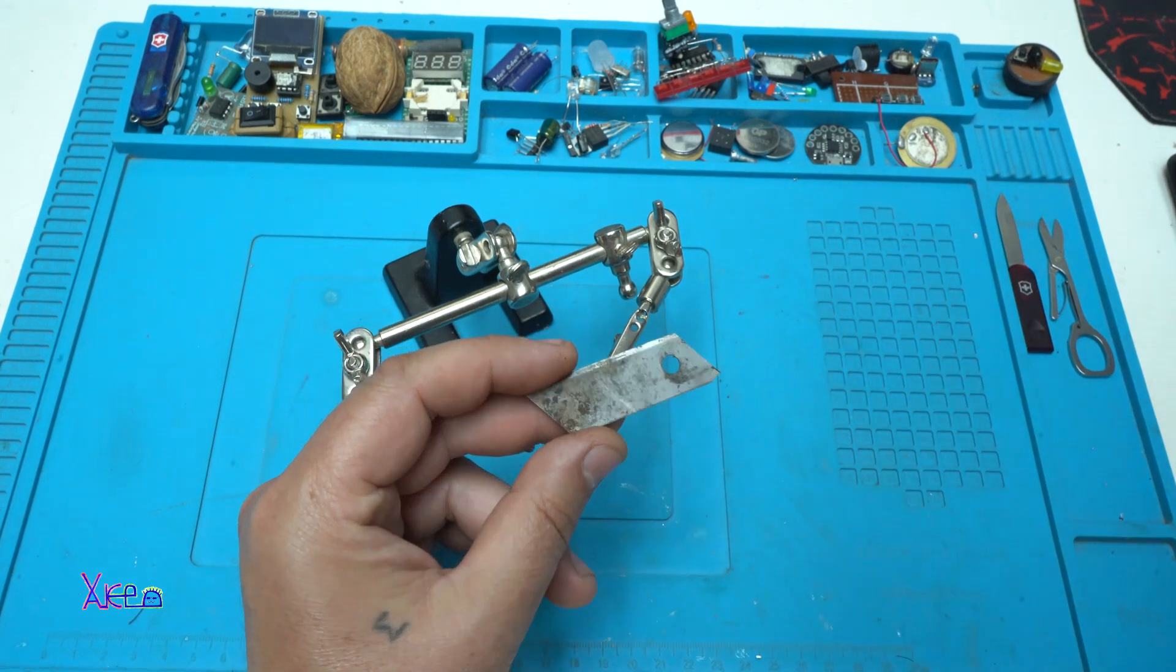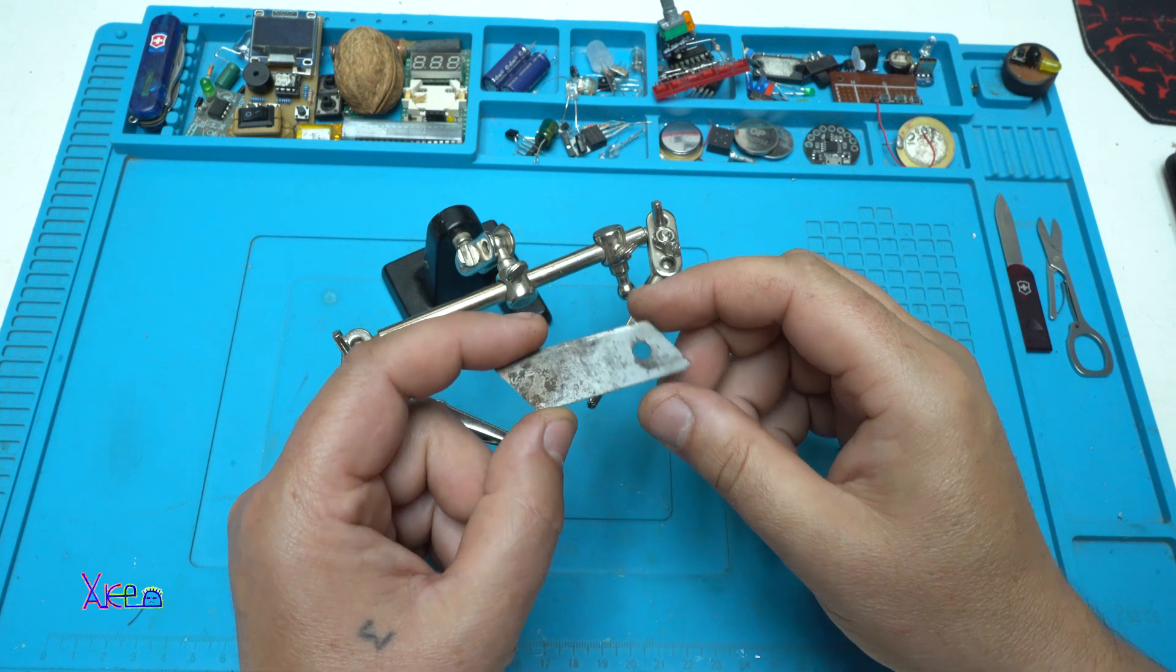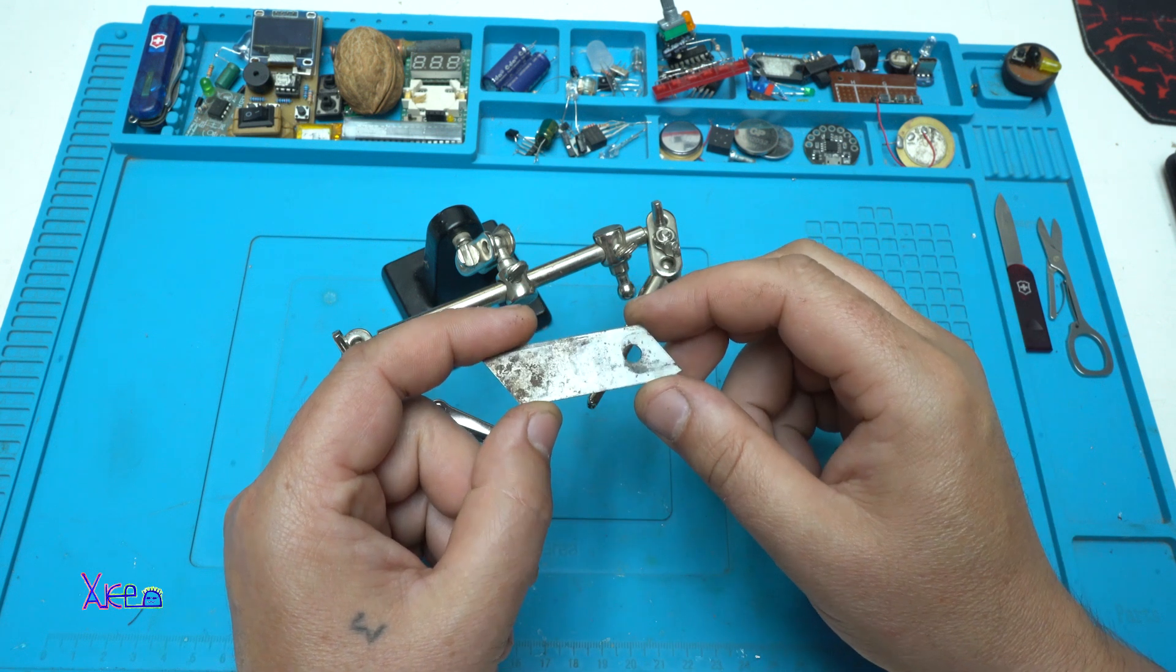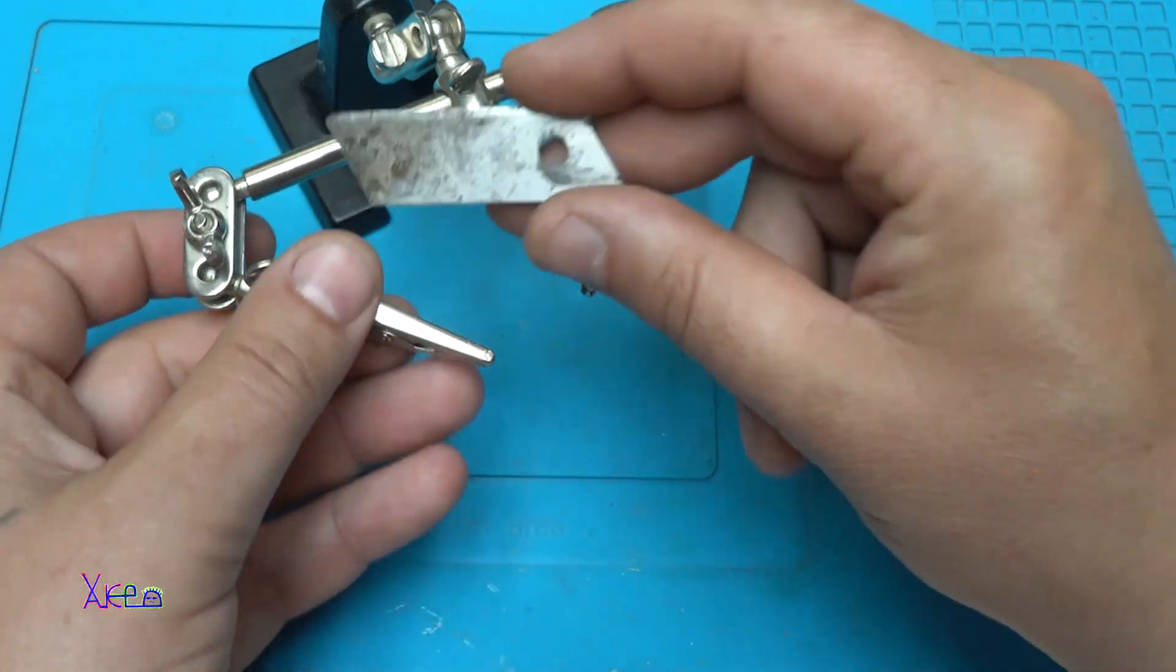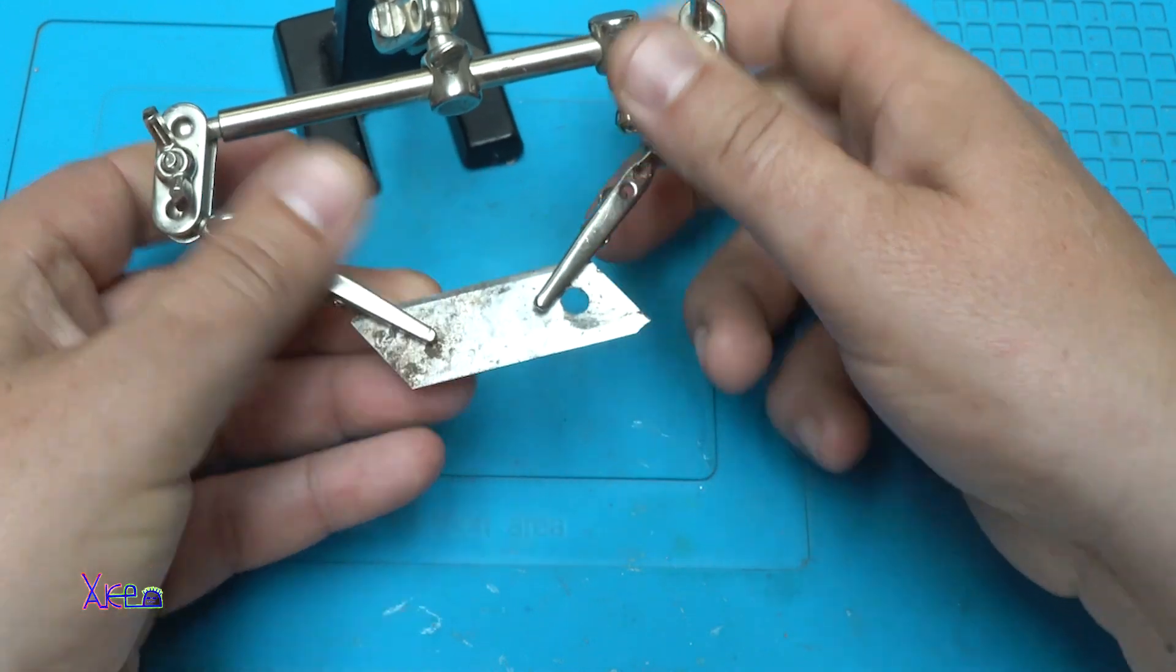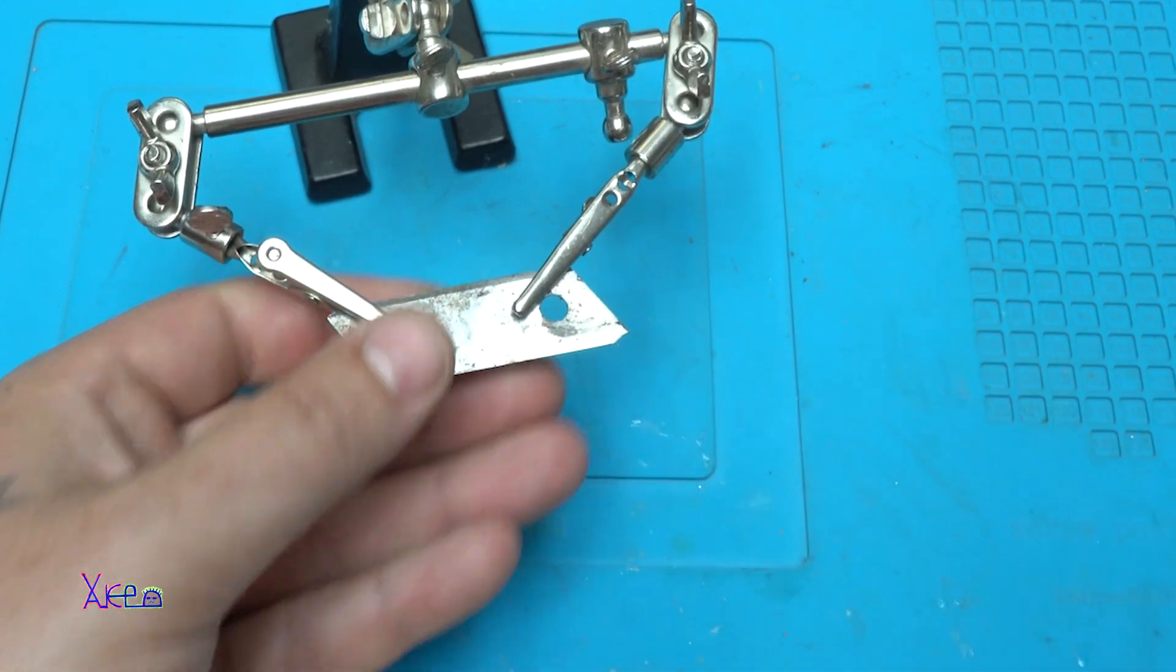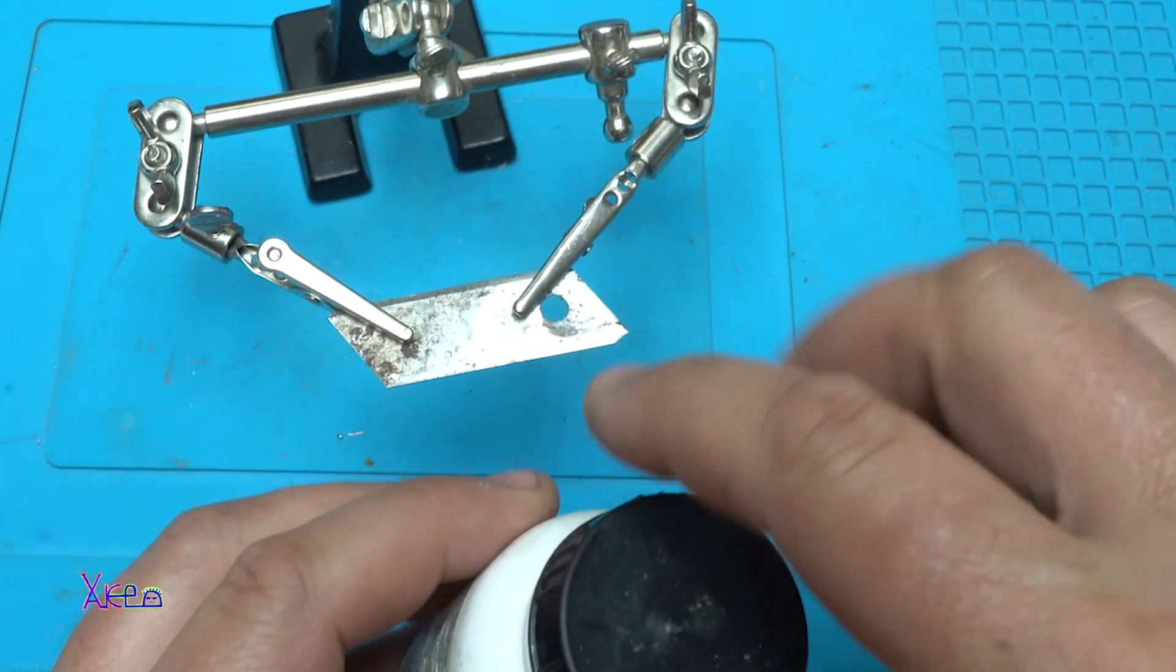The next trick is to show you how you can solder on metal. You know that thing is very hard. But I'm gonna show you how you can do it. First you need to clean the surface of the metal.